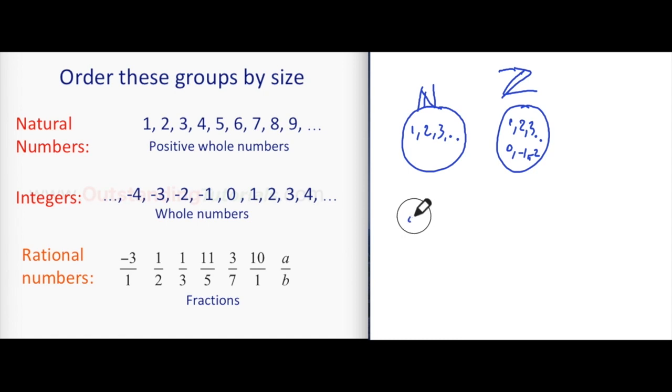People think, can number two be a rational number? Well of course it can, because it can be written as two over one. Can the number 10 be a rational? Of course it can, 10 divided by one is a rational number because it's a fraction with two whole numbers a and b which are integers. So that's the rational numbers.